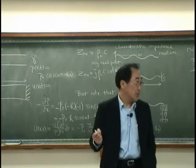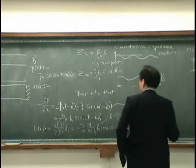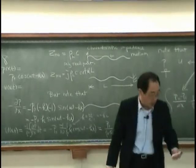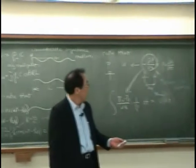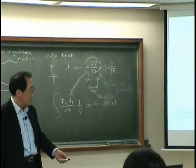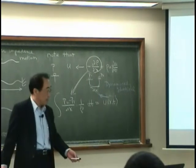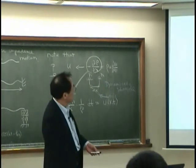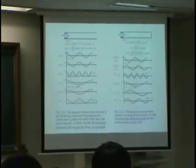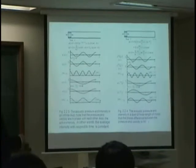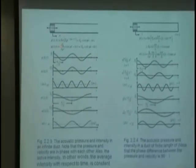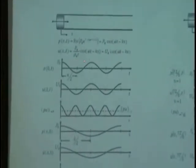What about the intensity? Let's look at intensity using the graph. This is the pressure, and this is the velocity, and the velocity is P0 over rho zero C.